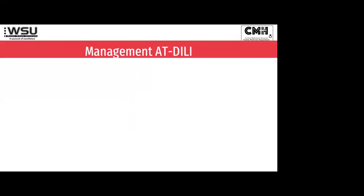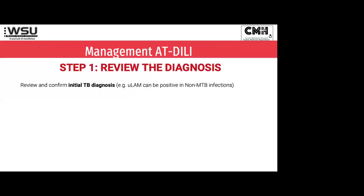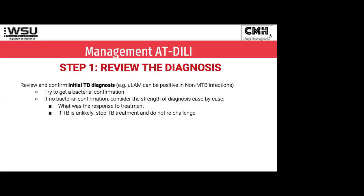We've got to quickly go through the steps — there are more detailed presentations on DILI on our website. Step one: review your diagnosis. This refers to when you see a patient who had been two months on TB treatment and now they've got a DILI — just double check, do they actually need to be on TB treatment? In our scenario it's really difficult to make that call, because quite often you haven't seen the patient from the start. It's easy if you've got bacteriological confirmation, but without it, I find it very difficult to now decide the patient didn't have TB in the first place.